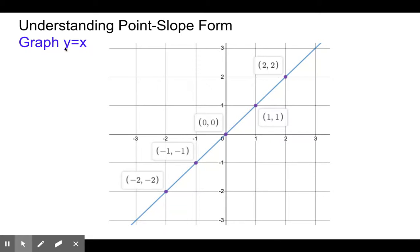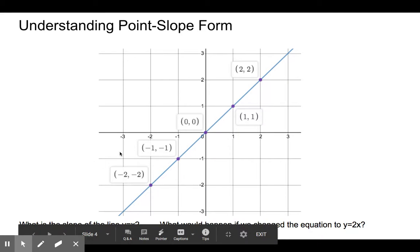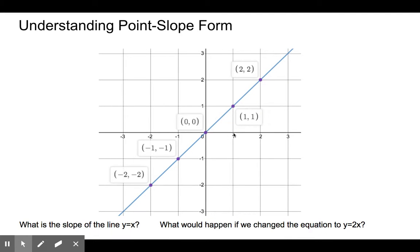Hopefully you recognize that y equals x is in slope-intercept form. The slope of y equals x — remember what slope means. Slope means that as I move one value to the right on x, how much does it go up? It goes up one value on the y, so the slope is 1. Using rise over run from any point, we rise 1 and run 1, giving us 1 over 1, a slope of 1.